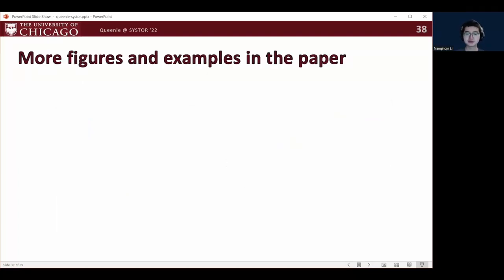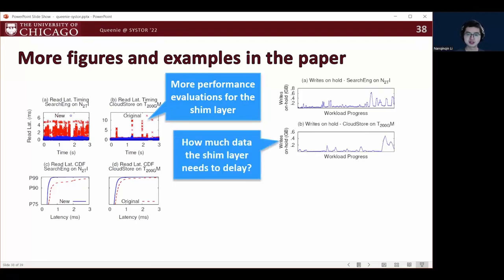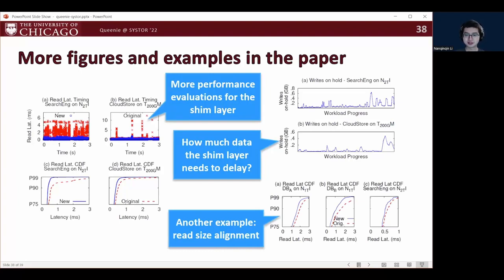New has more evaluation figures for the shame layer. For example, we evaluated more real-world traces on more SSDs. We also evaluated how much data the shame layer needs to delay. New also has another example of I.O. optimization by simply aligning resizes to achieve better performance. Please see the paper if you're interested.